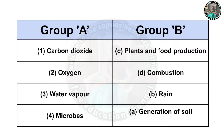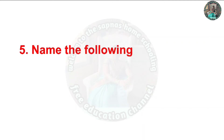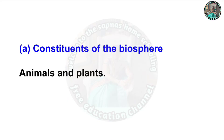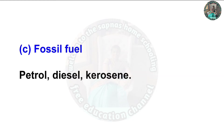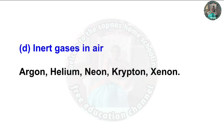Question 4: Match the following. Group A to Group B answers: Carbon dioxide — plants and food production; Oxygen — combustion; Water vapor — rain; Microbes — generation of soil. Question 5: Name the following constituents of the biosphere. Answer: Animals and plants are biotic constituents of soil. Microbes, insects, rodents like rats and mice. Fossil fuels: petrol, diesel, kerosene. Inert gases in air.